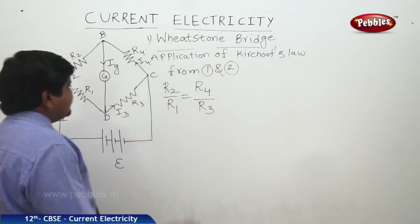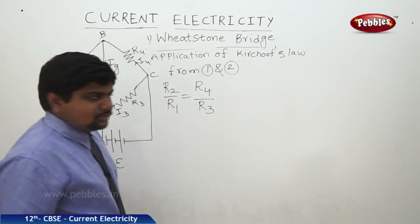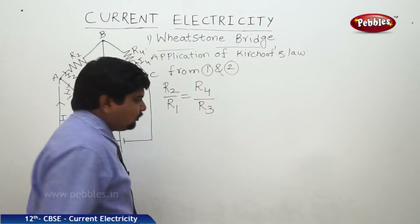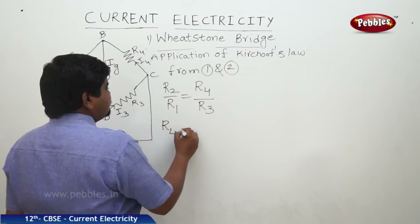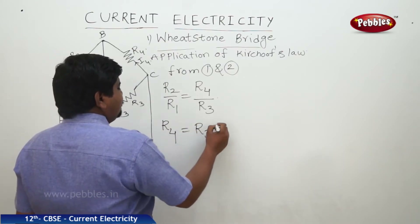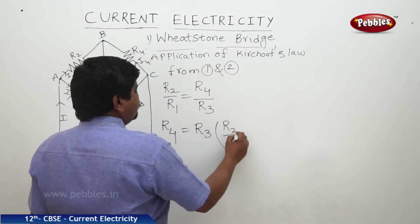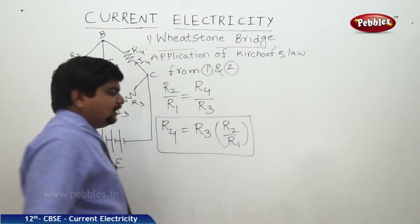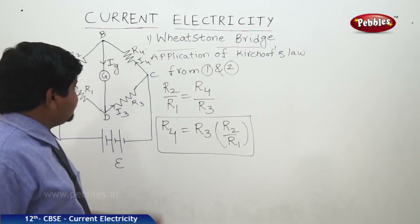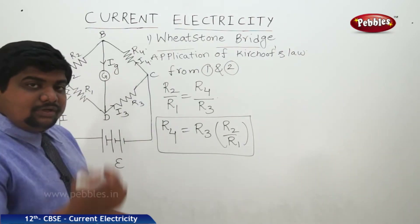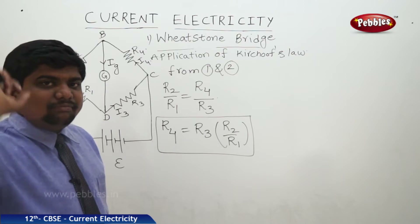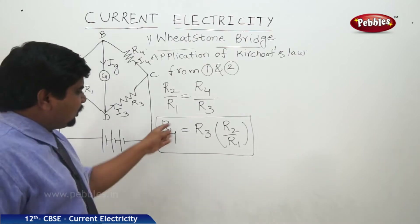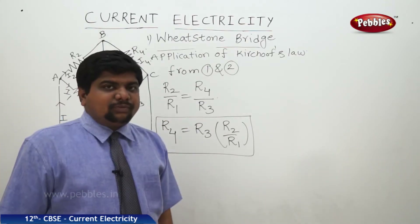We discussed that R4 is the unknown one. Now we are going to find out the expression to find the unknown resistance. Therefore, R4 is equal to R3 into R2 by R1. In this way, we can find out the value of unknown resistance which is in a bridge circuit to balance the circuit in a bridge shape. Therefore, R4 is equal to R3 into R2 by R1.